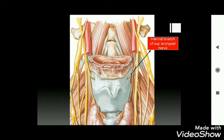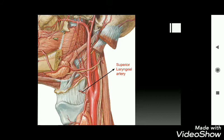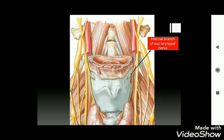The thyrohyoid membrane is pierced by the internal branch of the superior laryngeal nerve and the superior laryngeal artery. These two structures pass through the thyrohyoid membrane and supply the structures within.